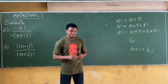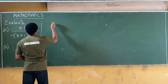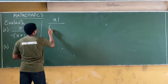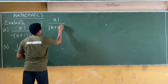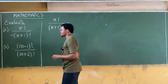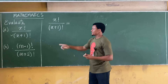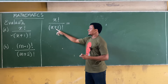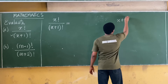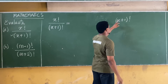So we have x! over (x+1)!. Since the denominator is the bigger term, we express the denominator in terms of the numerator. Let's express (x+1)! in terms of x!.